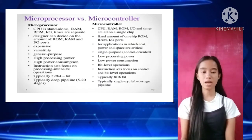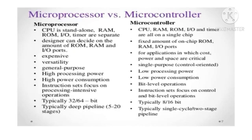For the differences: the microprocessor has a standalone CPU where RAM, ROM, input/output, and timer are separated. The designer can decide on the amount of ROM, RAM, and I/O ports. It is expensive, versatile, general purpose, with high processing power, high power consumption, and instruction set focused on processing-intensive operations — typically 32 to 64-bit with a deep pipeline of 5 to 20 stages.